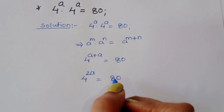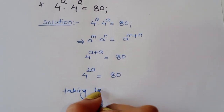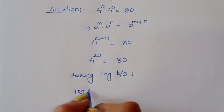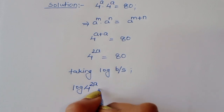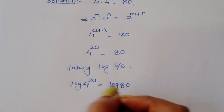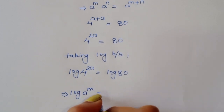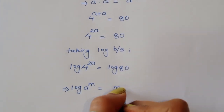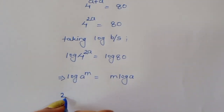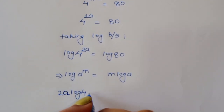Now we have to find out the value of a, so we can take log here. Taking log of both sides, we get log of 4 to the power 2a is equal to log of 80. We know the formula log of a power m is equal to m times log of a. So here the power is 2a, and we can write 2a times log of 4 is equal to log of 80.